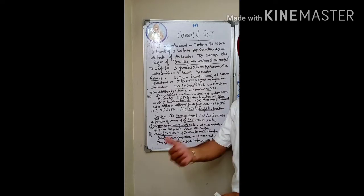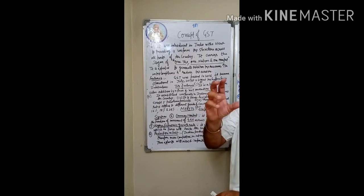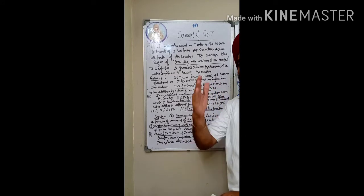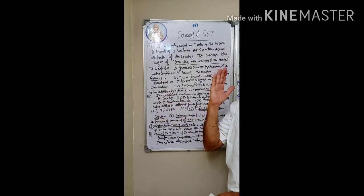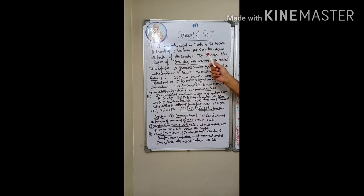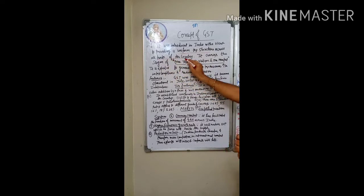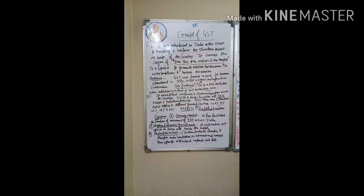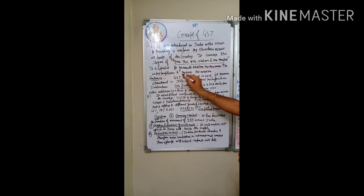First of all, why was GST introduced? It was based on the slogan 'One Tax, One Nation, One Market.' It was the biggest reform since independence — the biggest reform in indirect taxes — introduced with a view to provide a uniform tax structure across all parts of the country. It is expected to generate additional tax revenue, increase tax compliance, and reduce tax evasion.